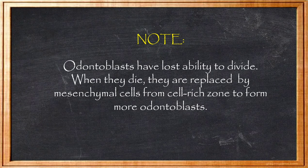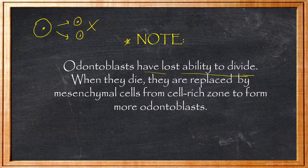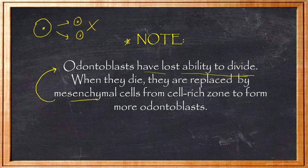An important note about odontoblasts: odontoblasts have lost the ability to divide. They form once and cannot replicate. So when dentine needs to be repaired (secondary dentine), and the original odontoblasts are damaged, the Mesenchymal cells — which are totipotent cells — differentiate and form new odontoblasts. Odontoblasts themselves cannot divide, but when damaged, mesenchymal cells replace them. Remember this — it can come as an MCQ question.